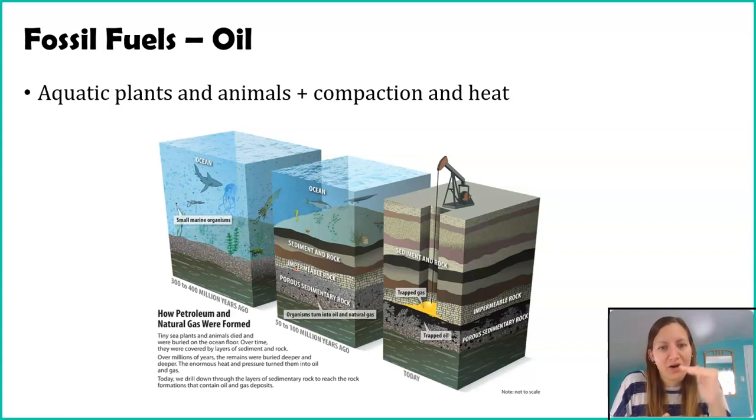So you're getting all this different stuff layering and layering. You can see those layers in here. As things layer, it's getting hotter. It's getting more compact. And eventually what happens, kind of similar to coal, is all of that carbon, all of that organic material, is slowly being turned into this oil, this carbon-rich resource.